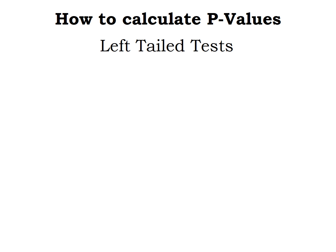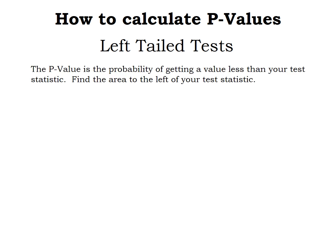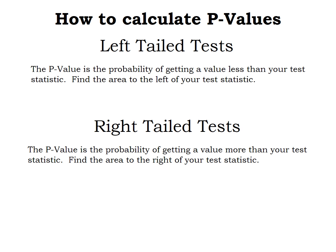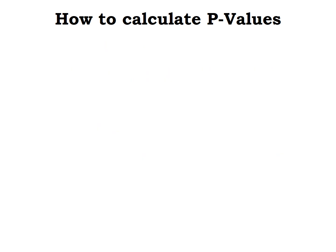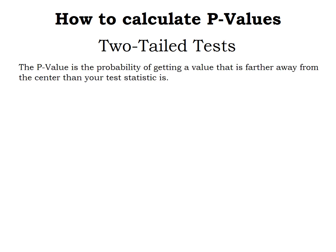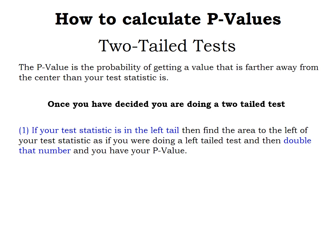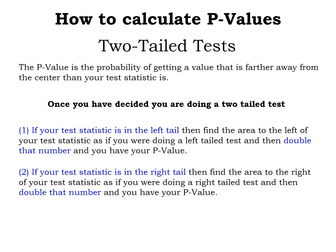As a reminder: for a left-tailed test, the p-value is the probability of getting a value less than your test statistic — find the area to the left using whichever tool is appropriate for z, t, or chi-squared scores. For a right-tailed test, the p-value is the area to the right of your test statistic. For two-tailed tests, if the test statistic is in the left tail, find the area to the left and double it; if it's in the right tail, find the area to the right and double it.